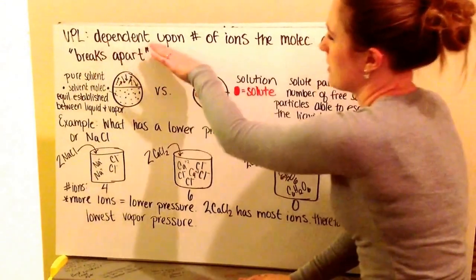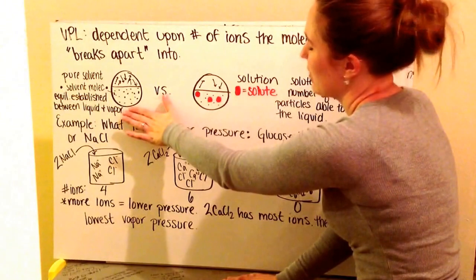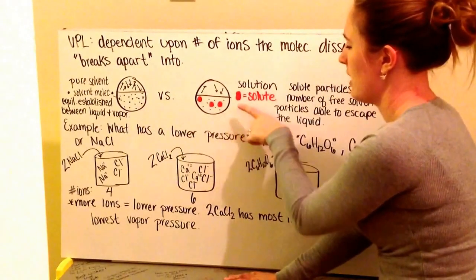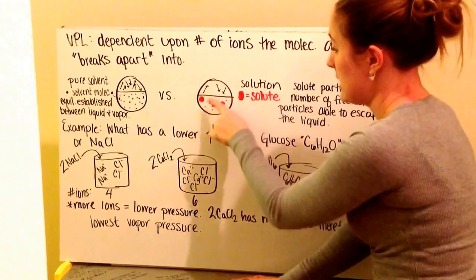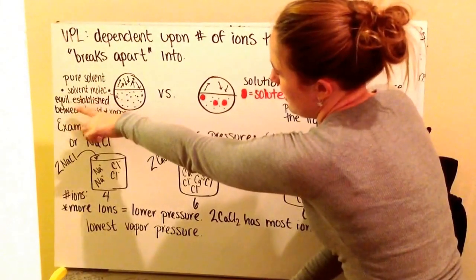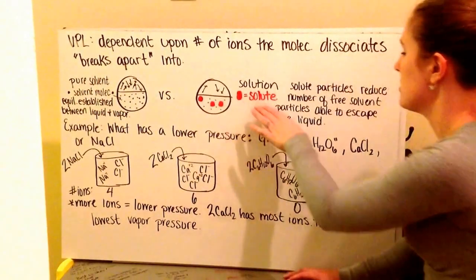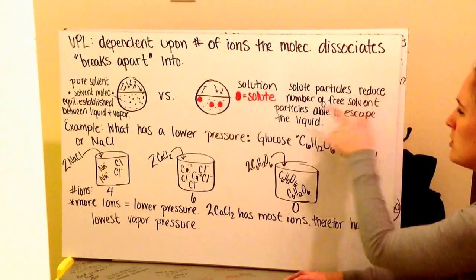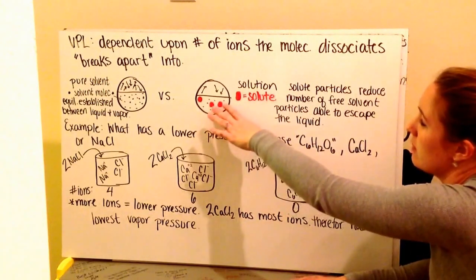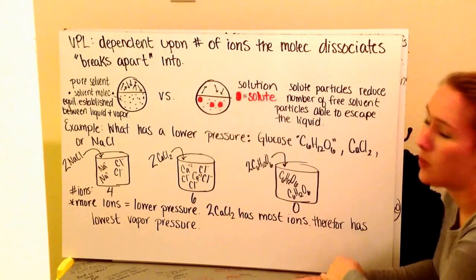Vapor pressure lowering is dependent upon the number of ions the molecule dissociates or breaks apart into. In a pure solvent — represented by black dots — there's an equilibrium between the liquid and vapor phases and molecules move back and forth with ease. In a solution, the solute particles (the big red ones) reduce the number of free solvent particles able to escape into the vapor phase. There's less solvent going into the vapor phase, therefore decreasing or lowering the vapor pressure.